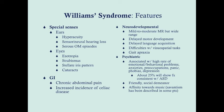Gastrointestinally, these patients can have chronic abdominal pain due to multiple causes. There is an increased incidence of celiac disease, and also an increased risk of colonic diverticulosis — the latter related to their connective tissue issues stemming from the elastin mutation.